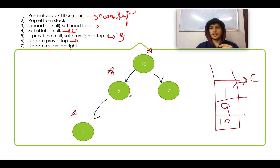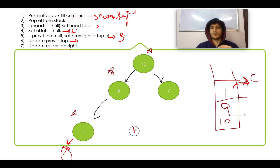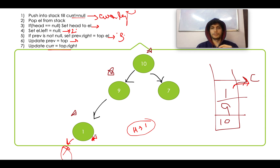Let's walk through the example with a stack. Starting with current at 10: while current is not null we push onto the stack — 10 is pushed, then 9 is pushed, then 1 is pushed. As soon as current.left is null, we stop. We pop the topmost element (1) from the stack. Since head is null, we set head equal to this element — node 1 becomes the new head of the tree.